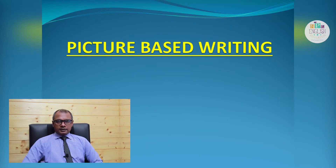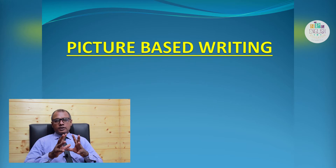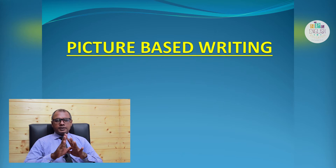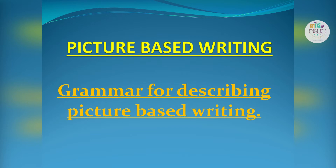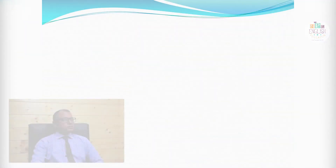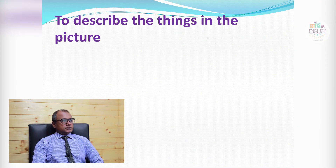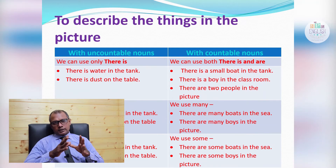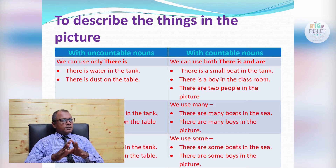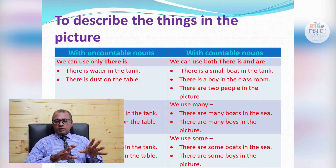For picture-based writing, first look at the picture. We need to know how to write about it in an organized way. We will look at the grammar for describing picture-based writing. To describe the things in the picture, we need to know about preparatory 'there' — how to use it. We use two kinds of nouns: countable and uncountable.